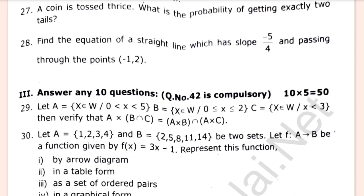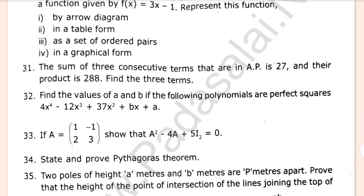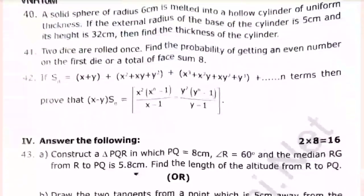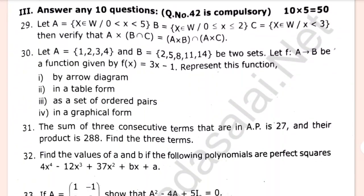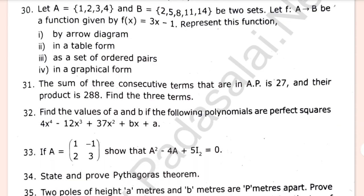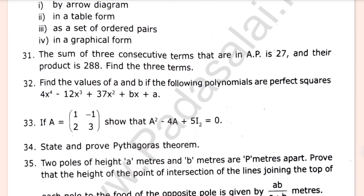Answer needs 10 questions; the second question is compulsory. Sum of 3 consecutive terms in an AP is 27 and their product is 288 — find the 3 terms. State and prove Pythagoras theorem.